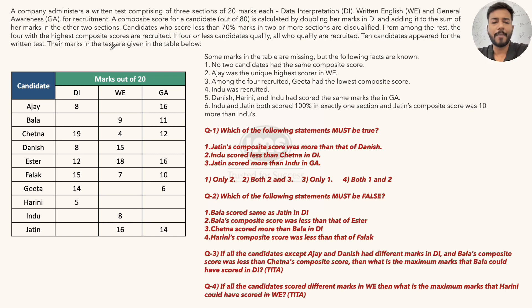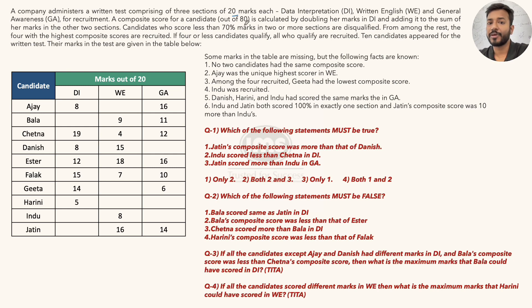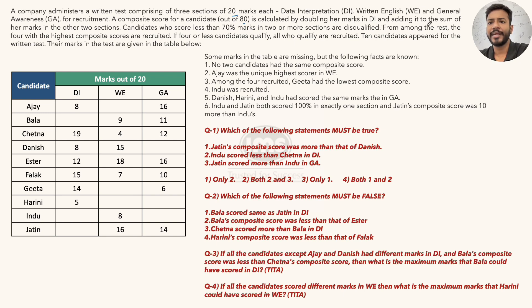Let us start reading this. A company administers a written test comprising three sections of 20 marks each: DI, Written English (WE), and General Awareness (GA). So these are the three sections, each of 20 marks. A composite score for a candidate out of 80 is calculated.